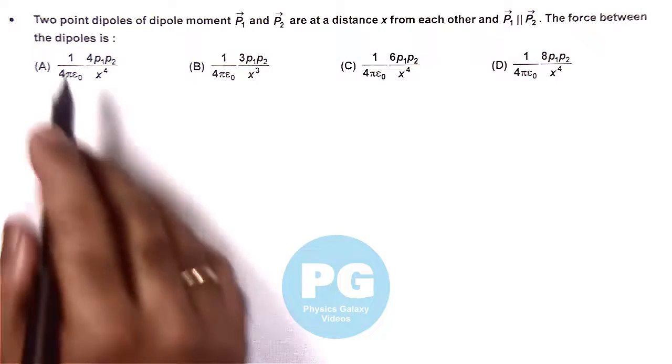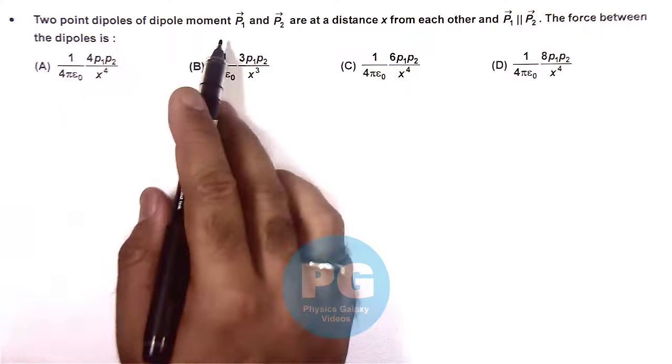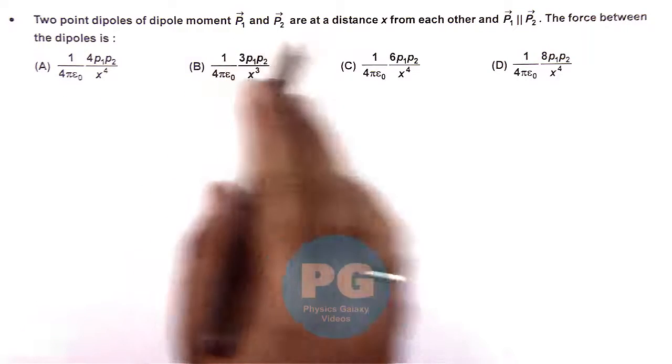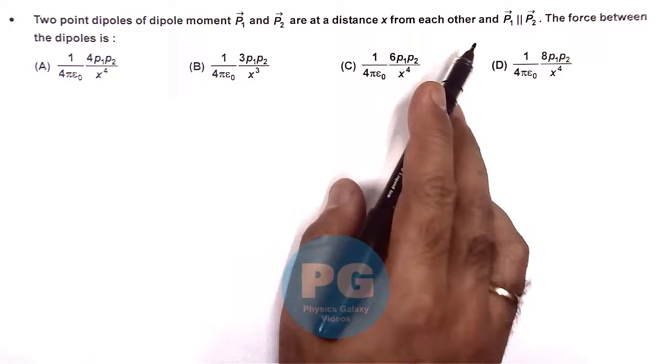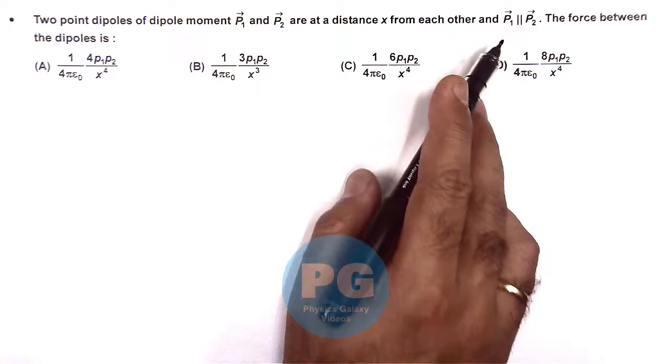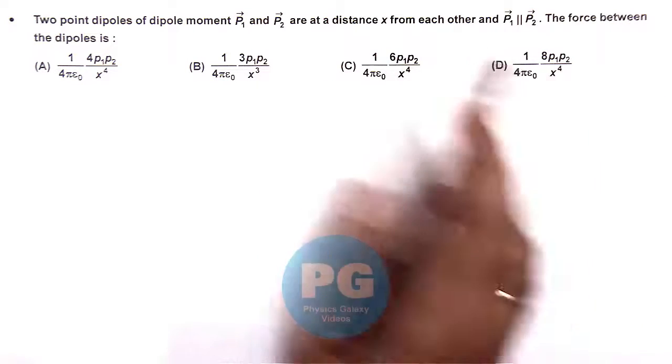In this question, we are given two point dipoles of dipole moment p1 and p2 vector at a distance x from each other, and these two are parallel or we can write these are along the same line.